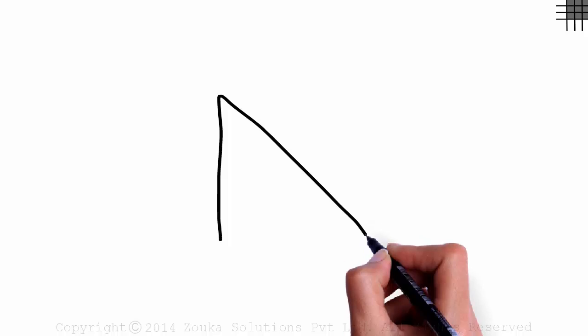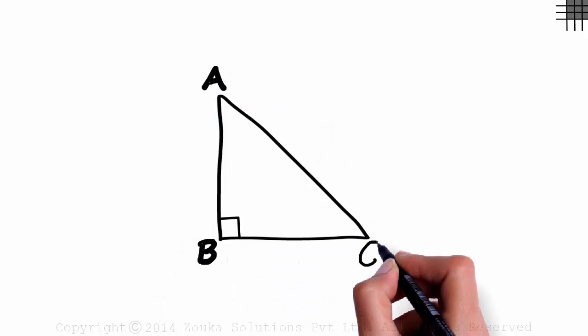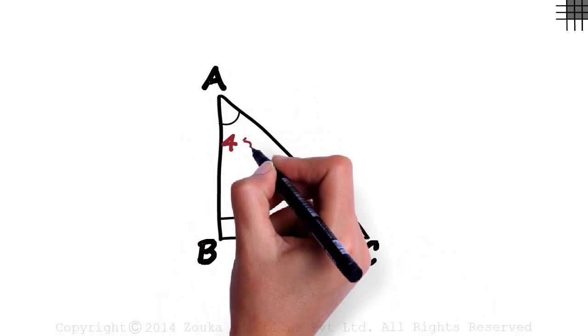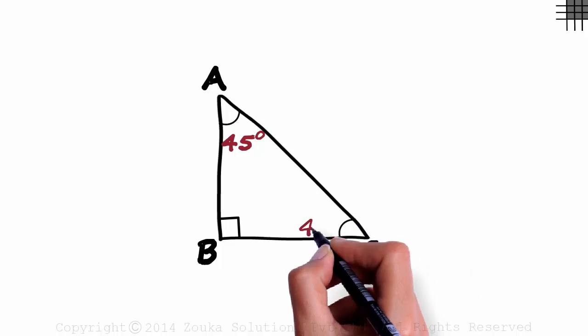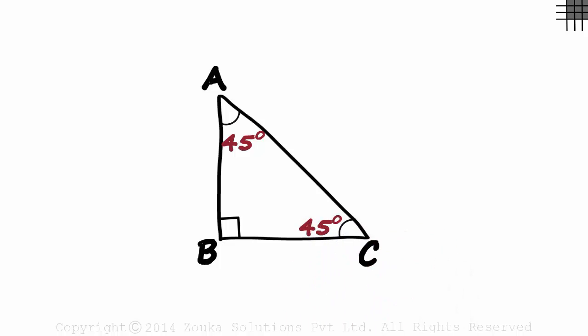Let me try drawing the 45-45-90 triangle here. This angle measures 45 degrees and so does this one. We say it's special because given any one side of this triangle, we can easily find the lengths of the other two.